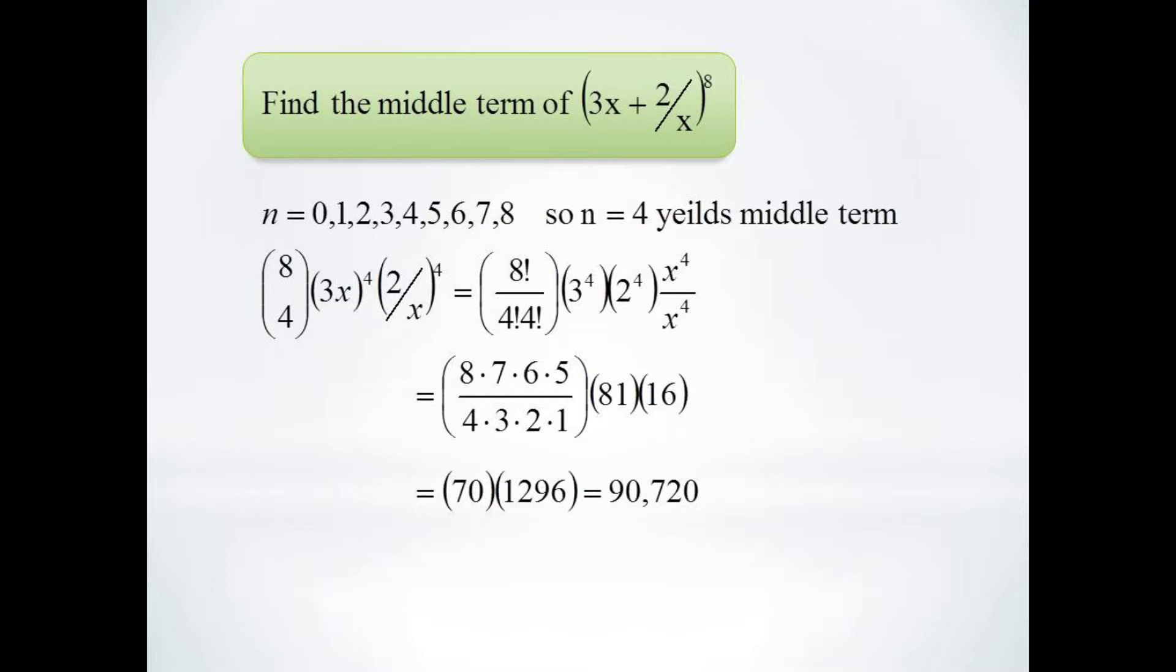The x to the 4th terms cancel, and we're left with 70 times 81 times 16, which is 90,720.